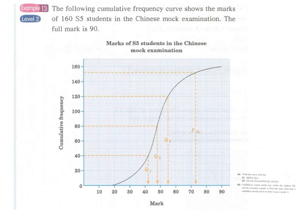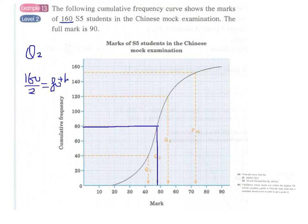And since we have 160 students, let's look at Q2, the middle value. This will be the middle mark of 160 students. And for graphical methods, we simply divide this by 2. That is, we have to find the 80th value of the student marks. So if we read from here, we can find Q2 here. This is Q2. And this is about 48 marks.